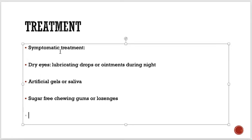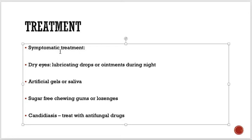If there is a fungal infection like candidiasis, treat with antifungal drugs. All treatments are symptomatic. For vaginal dryness, lubricants like KY jelly can be given. This is essentially how symptomatic treatment is done for these patients.